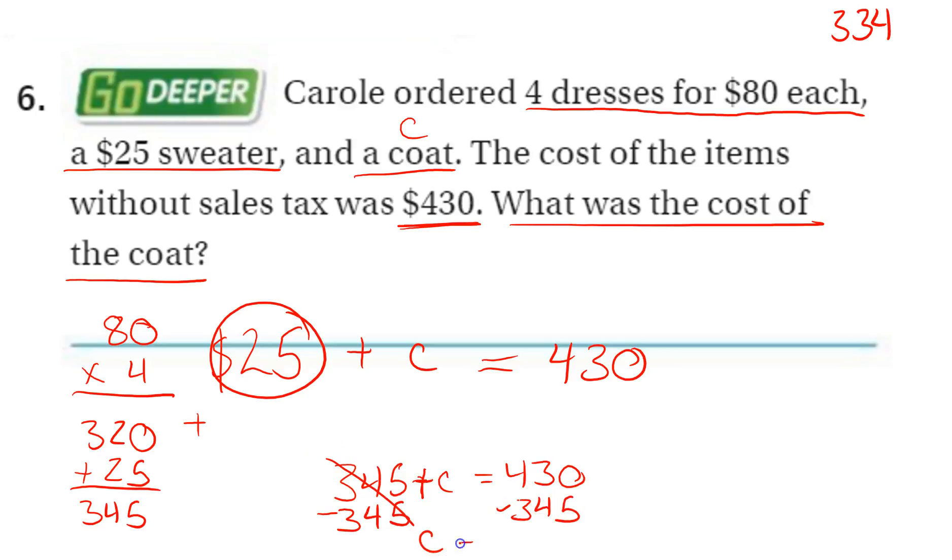That leaves you with just C on the left side. And then now I just need to do that math to figure out how much the coat cost. What was the cost of the coat? $85.